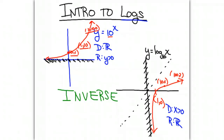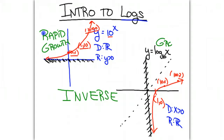Let's compare these two graphs. Our exponential function is showing rapid growth. If we look at the inverse we've created — this log function — we still have growth, but you can see that the growth is happening much, much slower than in the exponential function.